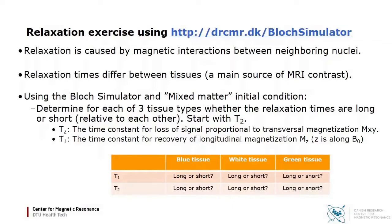For each tissue type, you can determine whether T1 and T2 is relatively long or relatively short. When you have determined the relative T1s and T2s, you can try to establish the relative proton densities that are proportional to the tissue's equilibrium magnetizations.